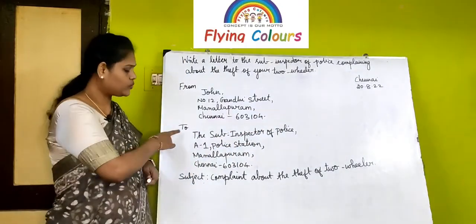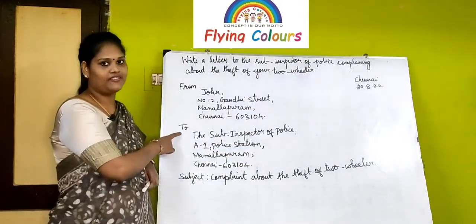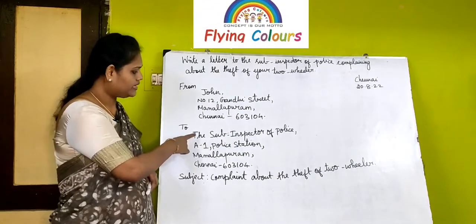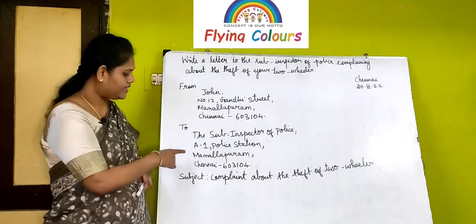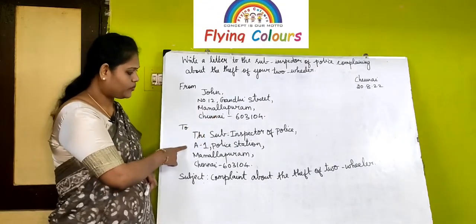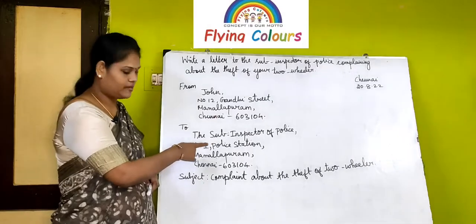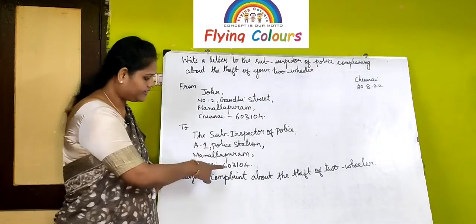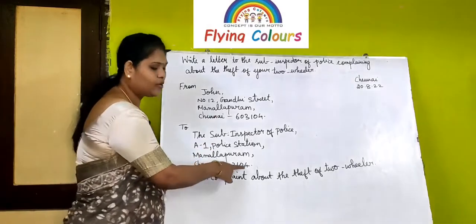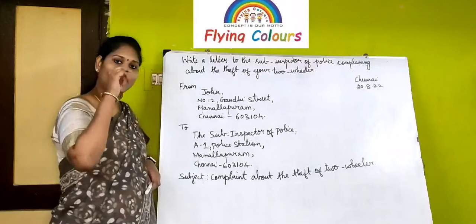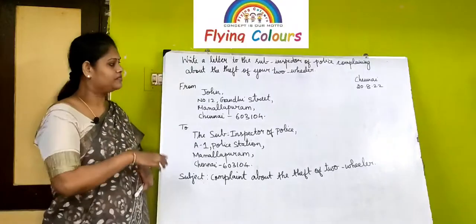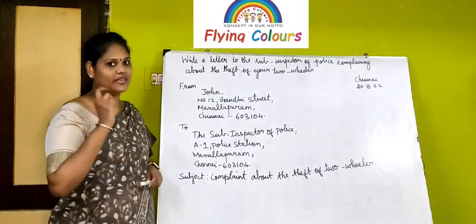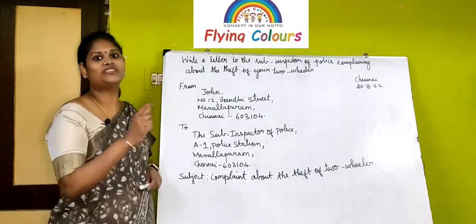For all entries, write a comma, and for Chennai pin code put a full stop. The 'To' address also doesn't have a punctuation mark before it. Write: To the Sub Inspector of Police, A1 Police Station, Mamalaburam, Chennai 603104 — pin code followed by a full stop.